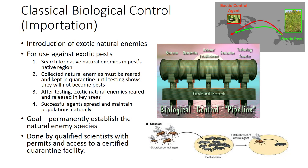To implement a successful biological control importation program, several steps must be taken. First, the pest organism in its native area must be correctly identified. Next, searches for natural enemies are conducted in the native area and appropriate species are shipped back for testing. Shipments are then held in strict quarantine to keep out potential contaminants and to confirm that the natural enemy will have minimal negative effect in the new country of release.